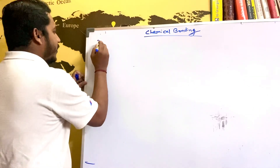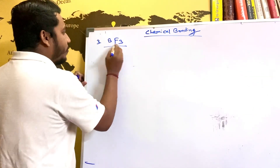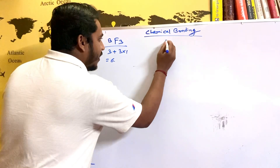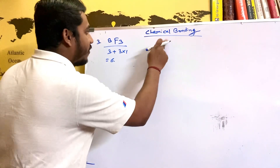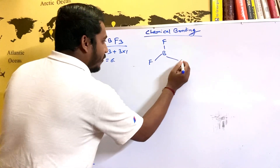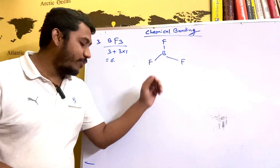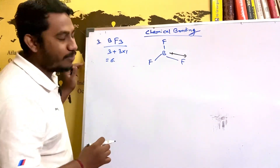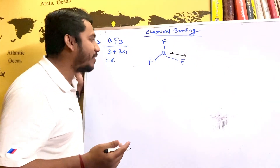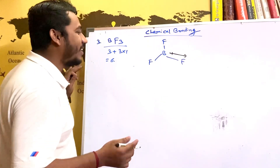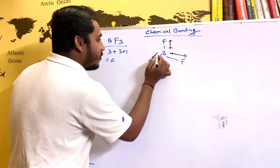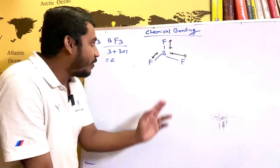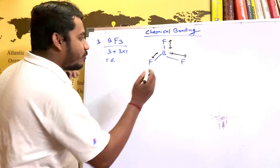The next example is BF3. The valence electrons are 3 from boron plus 3 into 1 from fluorine, giving 6. A steric number of 6 means the structure is trigonal planar. Between boron and fluorine, fluorine is more electronegative — in fact, fluorine is the most electronegative element. So each B-F bond has a dipole from positive to negative. In a trigonal planar structure, the bond angle is 120 degrees.